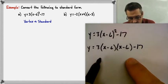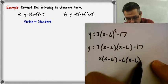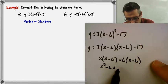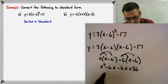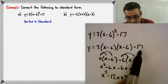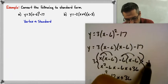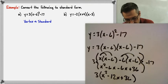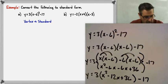We'll distribute, so we get x squared minus 6x minus 6x plus 36. Combining like terms gives us x squared minus 12x plus 36. Remember, we still have to carry down the 3 and the negative 17. So all of this has to be multiplied by 3 still. We carry down: 3 times (x squared minus 12x plus 36) minus 17, which equals y. Then we distribute the 3 and combine like terms to get our standard form.